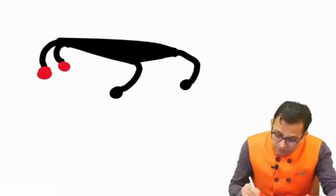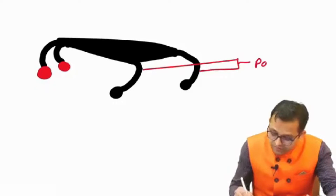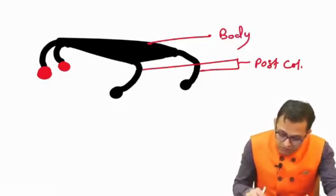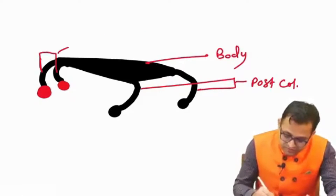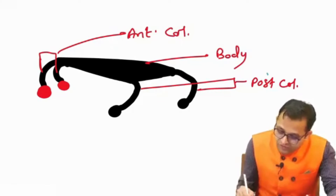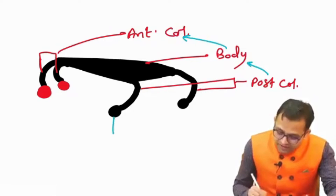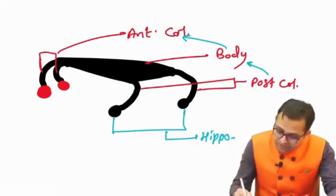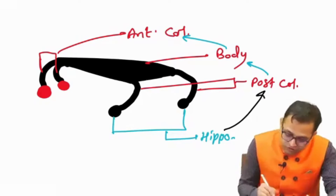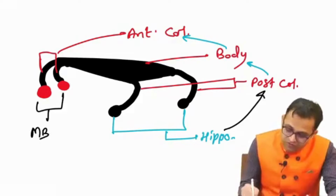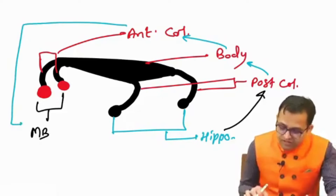What are the different parts of the fornix? The posterior column, the body, and the anterior column. The impulse goes from the posterior column to the body to the anterior column. From the hippocampus to the posterior column, and from the anterior column the impulse reaches the mammillary body.